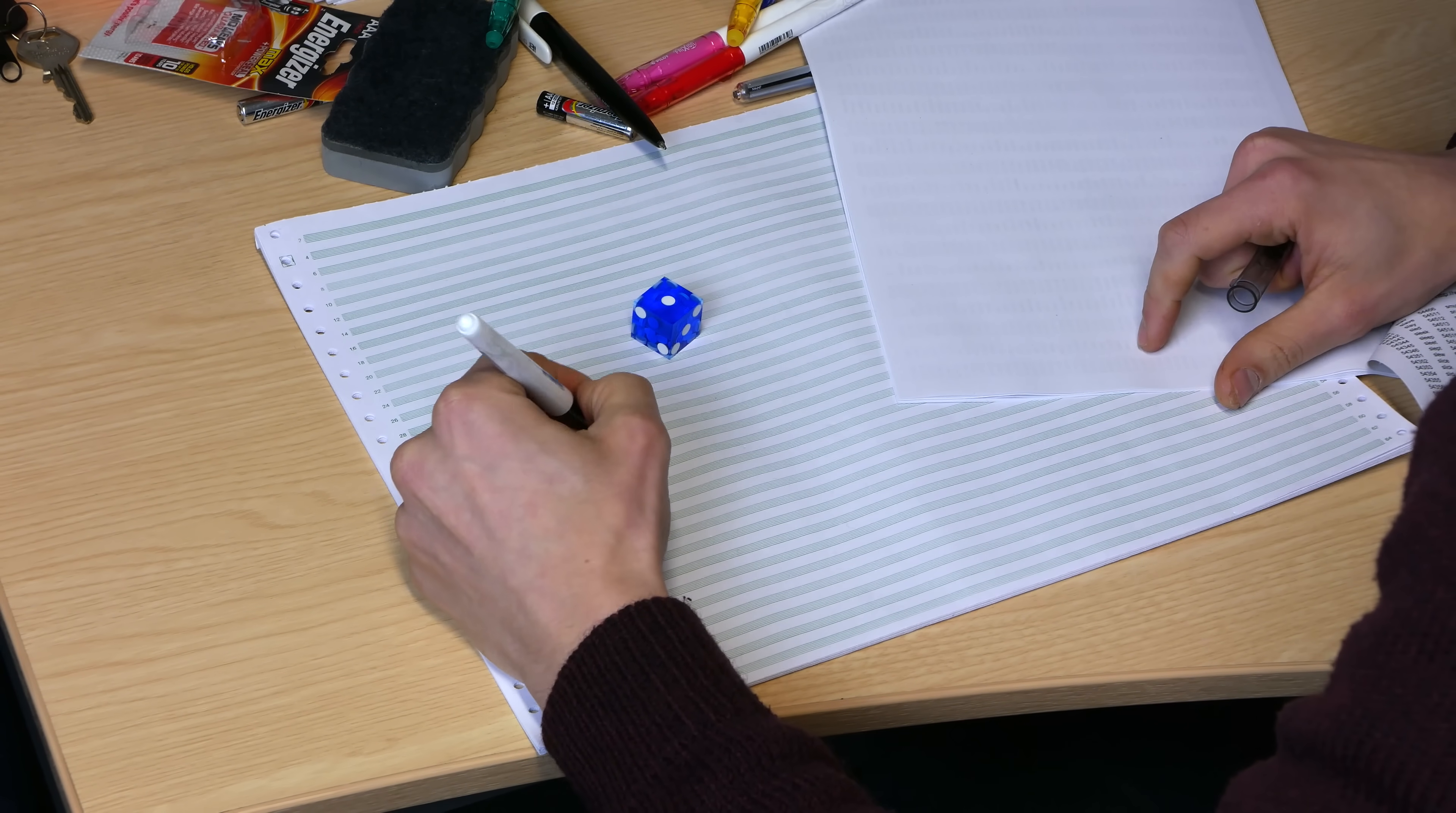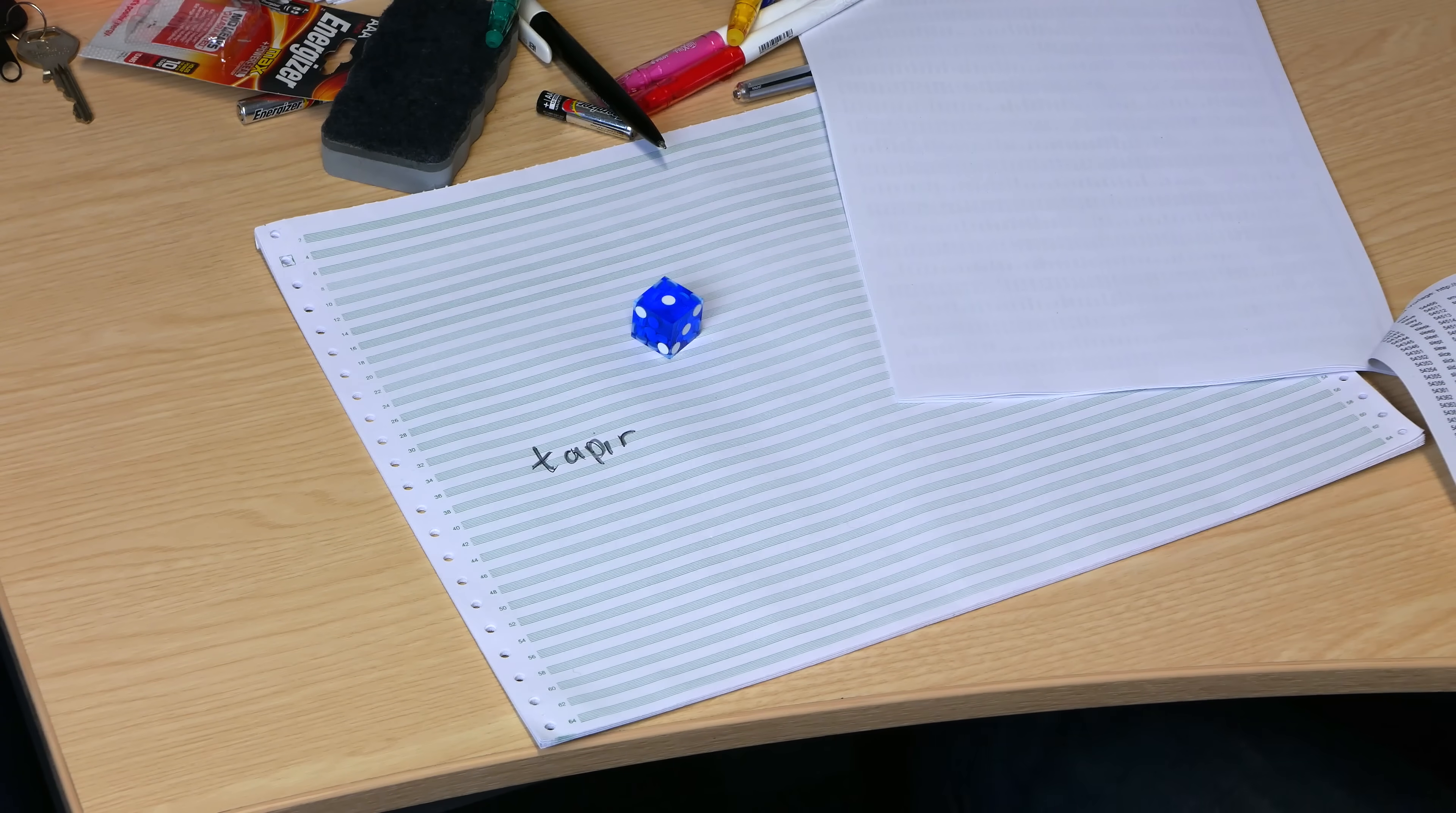One. Five, six, four, five, one is the word tapir, as in the animal with the snout. So that's the first word of my password. So let me write that down. This could take a little while. This is where you need to use all of your video editing skills. Tapir. Right, let's do this again.